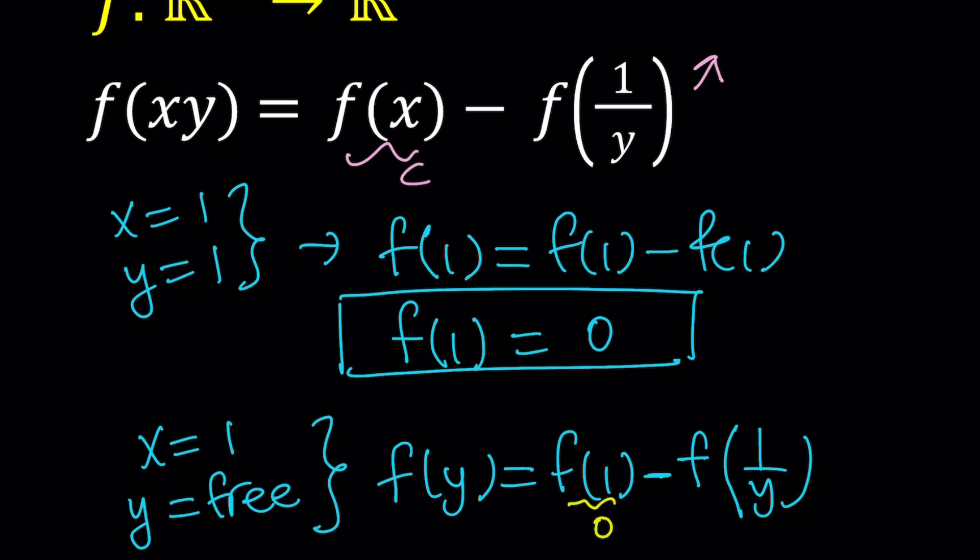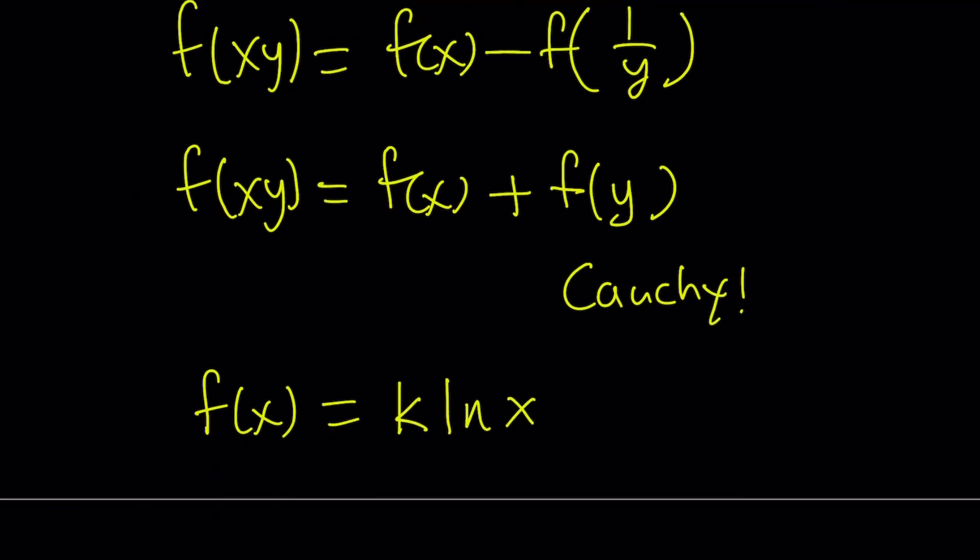And you get the following. c equals c minus c. And that means c is equal to 0. So f of x equals 0 is also a solution to this functional equation.